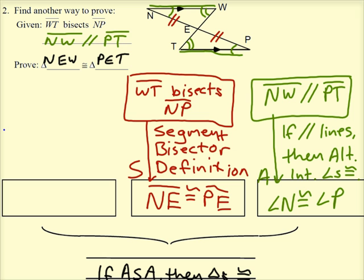The difference is, instead of using ASA, we would be using AAS. And here's why. In AAS, the pair of sides that are congruent are the non-included sides.